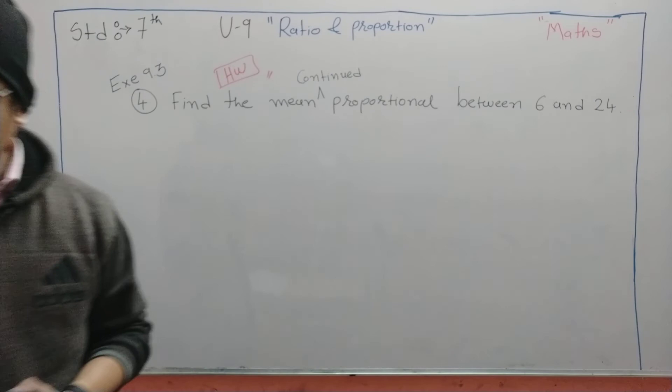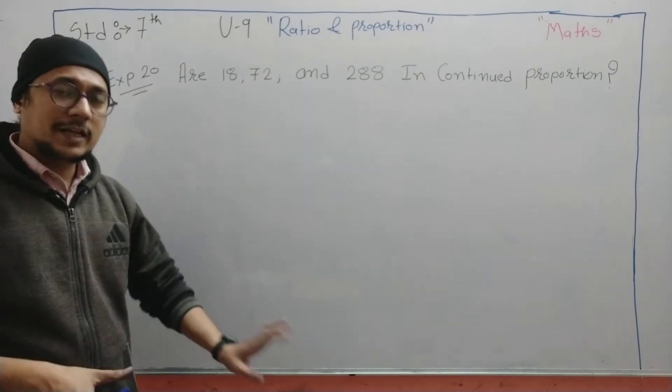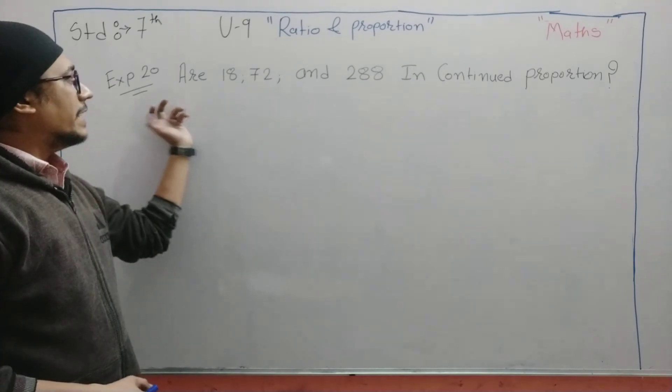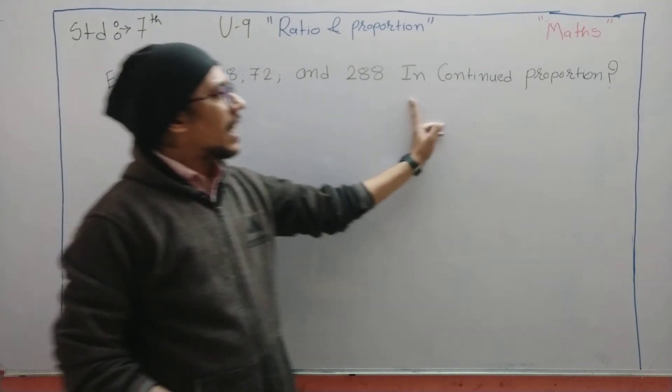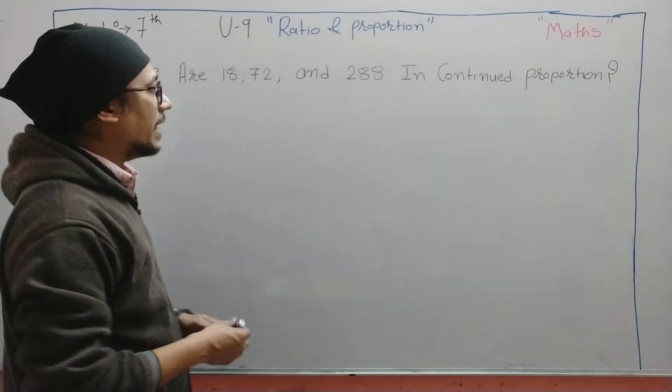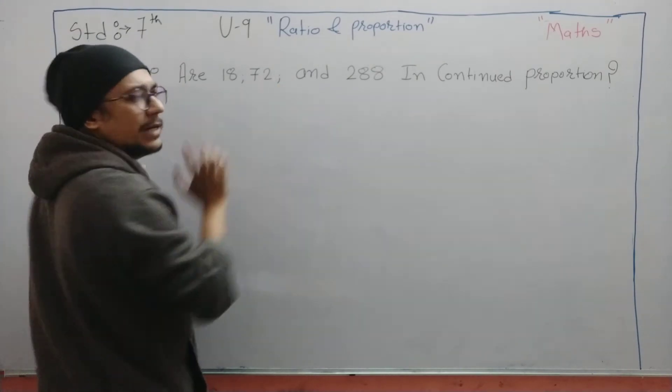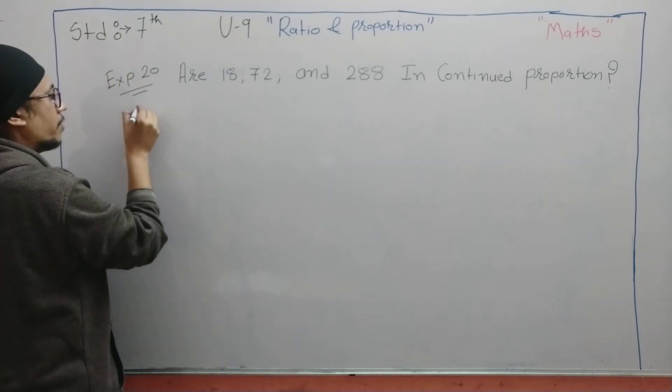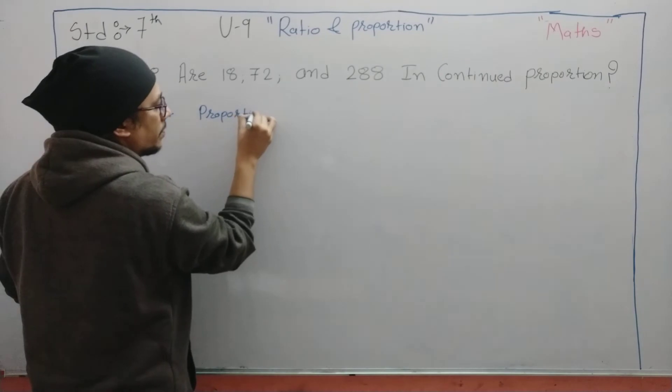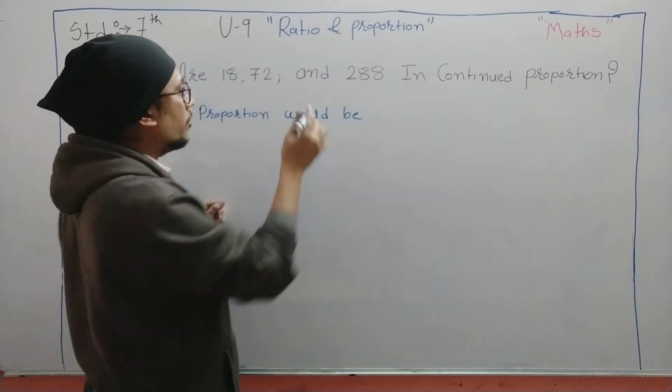Now I am pausing the video for further type of problems. Similar kind - this problem actually uses a formula, so it seems little bit different, but they are not difficult at all. Example 20: Are 18, 72, and 288 in continued proportion? What they're saying is: are 18, 72, and 288 in continued proportion? If they are in continued proportion, then this should be the middle term. So the proportion would be 18 is to 72 as 72 is to 288.